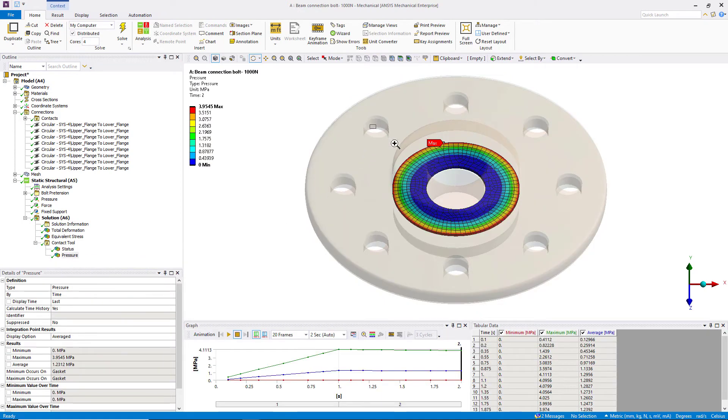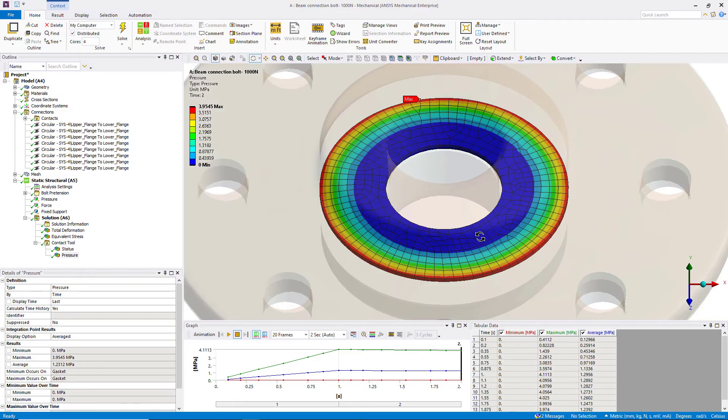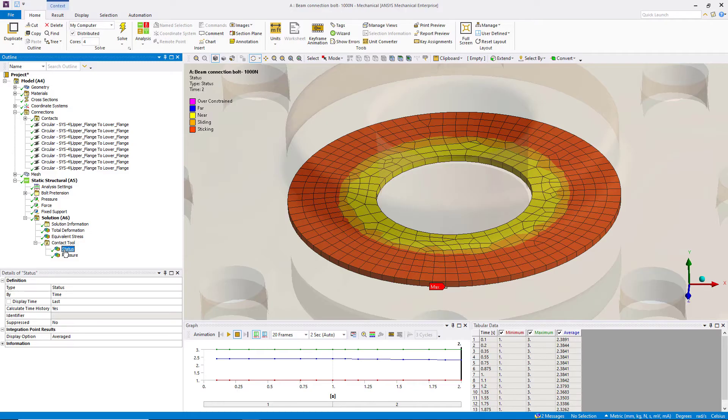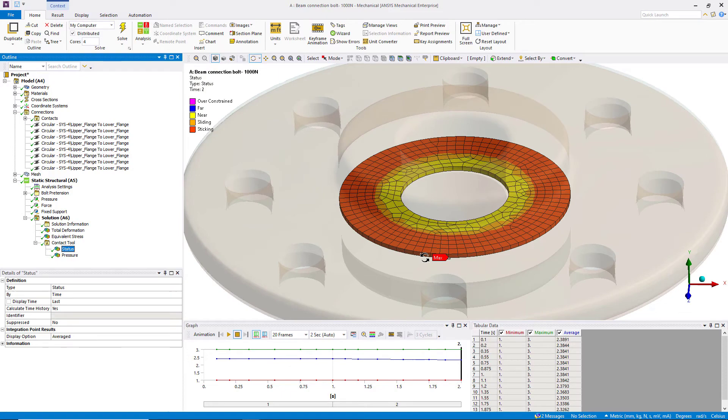Generally, the minimum contact pressure indicates the maximum internal pressure it can support before opening. This quantity along with contact status helps us identify if the contact is fully closed or if it's in a sliding or sticking state. Such information can help engineers in making design iterations to achieve the engineering goals.